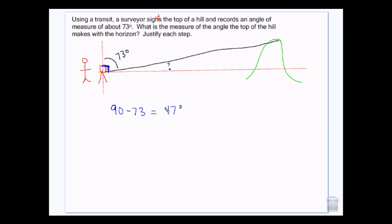90 minus 73 equals 17, so this angle here — the angle the hill makes with the horizon — would be 17 degrees. Whenever you're surveying to find the angle of ascent, like the steepness of a hill, the measurement you get from the transit is the angle coming down from vertical, so you subtract from 90 to find the angle going up.